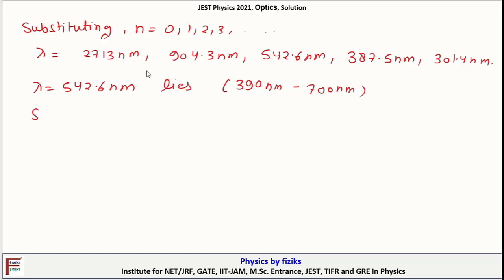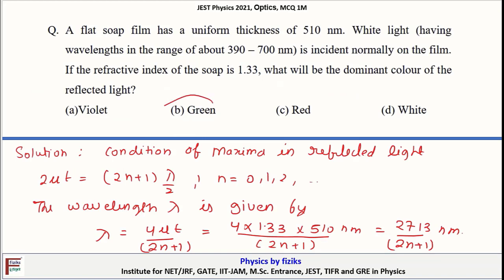One can see that λ equals 542.6 nanometer lies in visible range 390 nanometer to 700 nanometer. This λ equals 542.6 nanometer corresponds to color green. That means green color dominates in the reflected light. Option B is our correct answer for this problem.